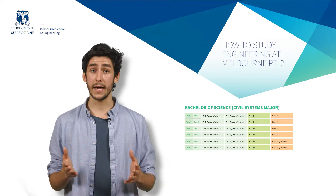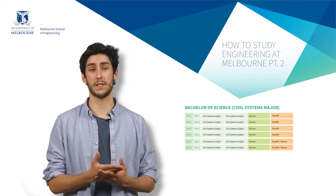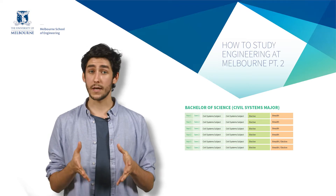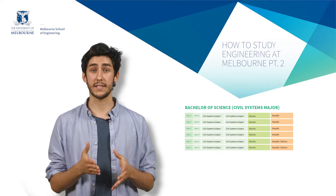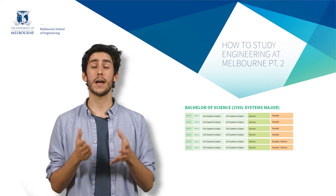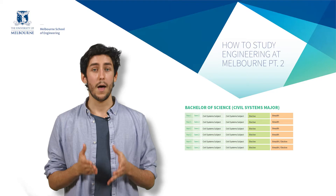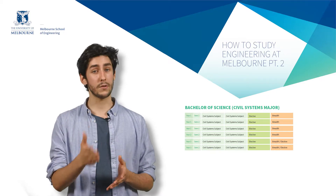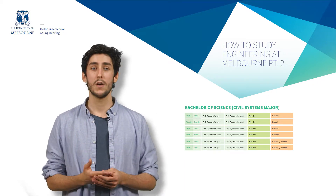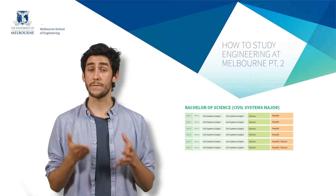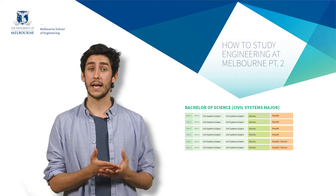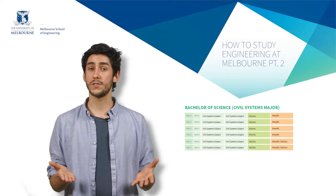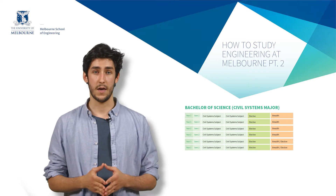In this case you would take two civil systems subjects per semester. One subject per semester is taken as a breadth subject. Breadth subjects are taken outside of your core discipline area, so as a Bachelor of Science student you might take art subjects, commerce subjects, or even music subjects.